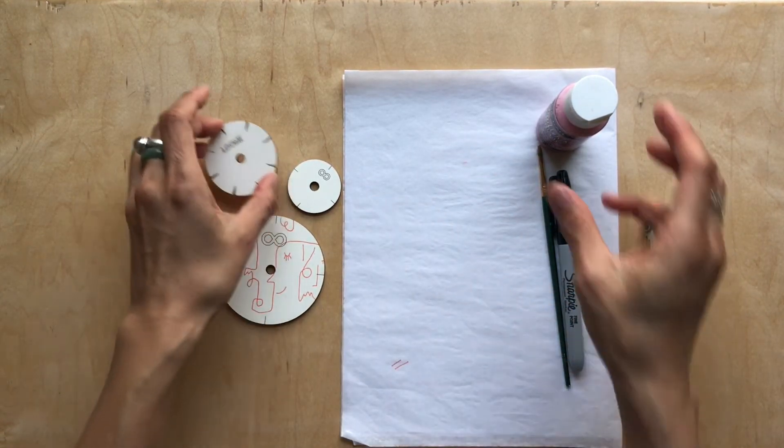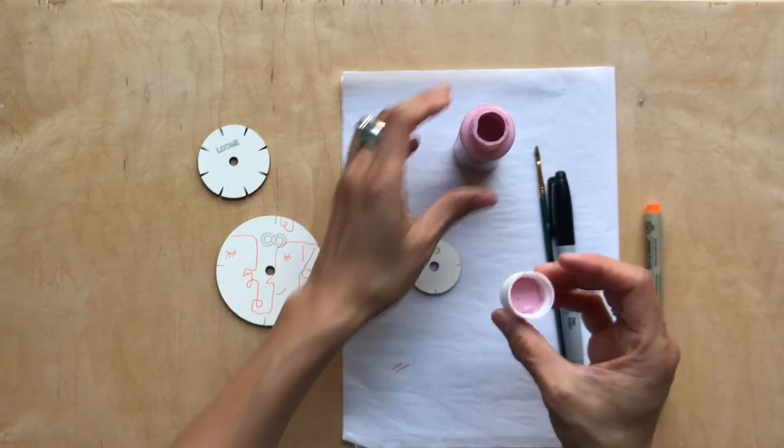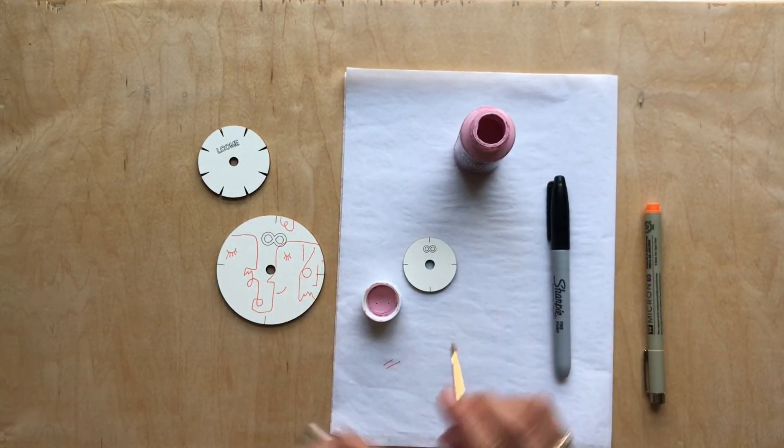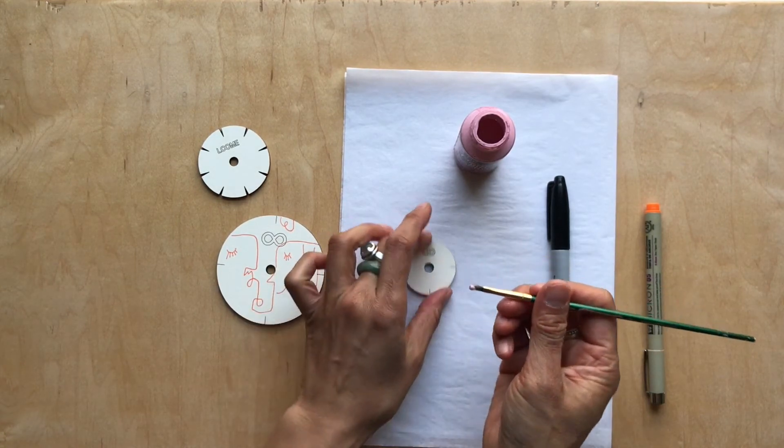And then for painting, just take your acrylic paint. I'm going to go pretty simple. Simple is always good for the surface. I'm just going to make little pink dots.